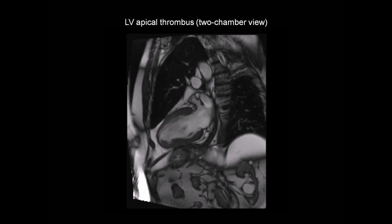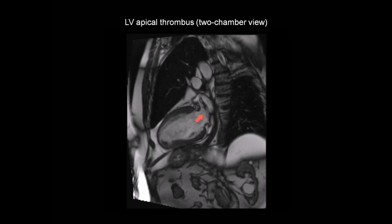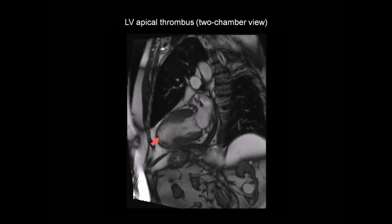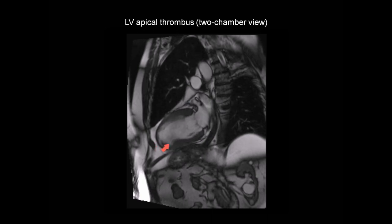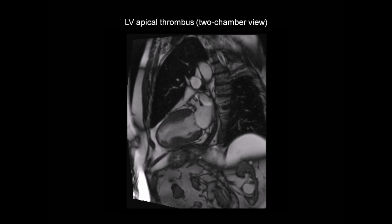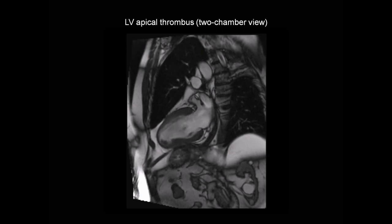Here's the same patient — this is their two-chamber cine-CMR image. Here's the left ventricle, mitral valve, and left atrium, and here's the left ventricular apex. And this time, I'm much more suspicious. Looking at the apex, there's this area in the apex just sitting here, which looks very suspicious of an apical thrombus. But to try and prove this, let's take a look at the equivalent late gadolinium enhancement image.